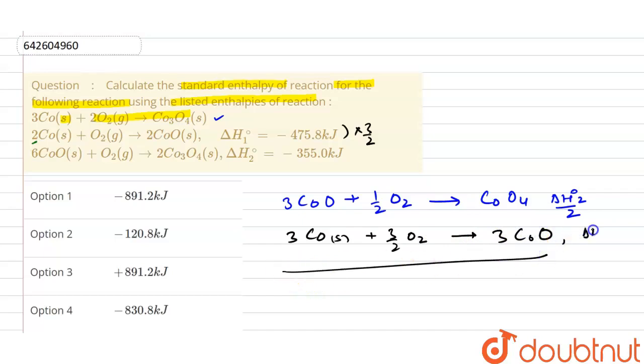What we have done in ΔH₁° is we have multiplied by three by two. After addition, what will happen, this will get cancelled out